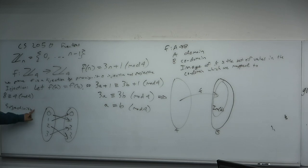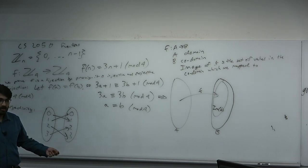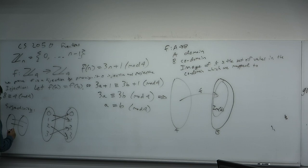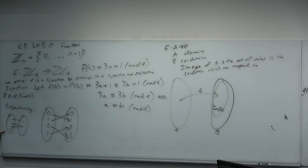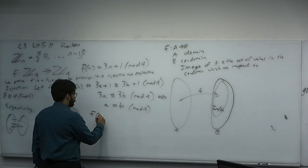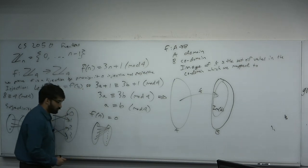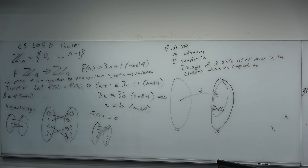A function is said to be total if all elements of the domain are mapped. All the functions we care about are total functions — every element of the domain must be mapped to something in the codomain. You'll never see in this class some element of the domain left unmapped; that would be a partial function. For example, F of N equals 0 for all N — all elements map to the same element — is still a total function.